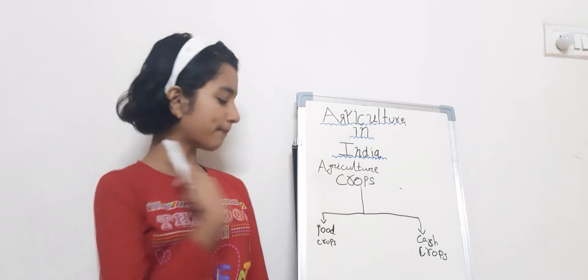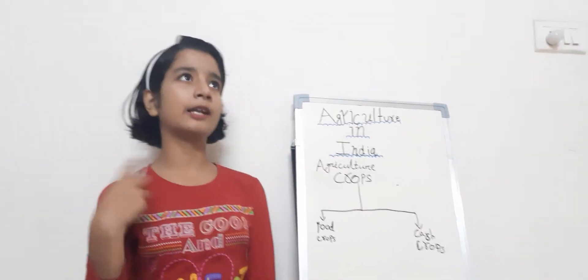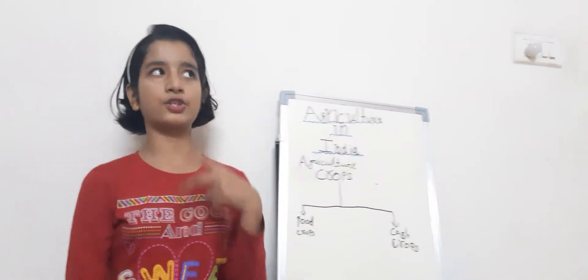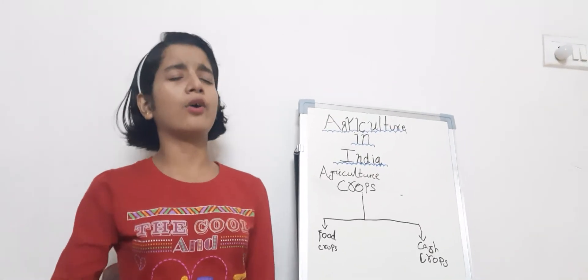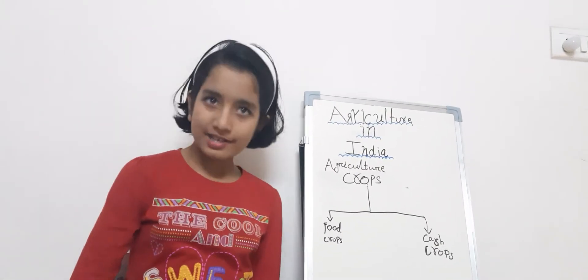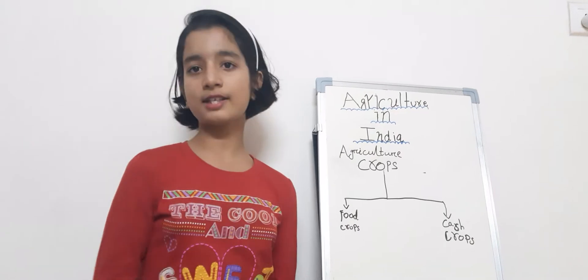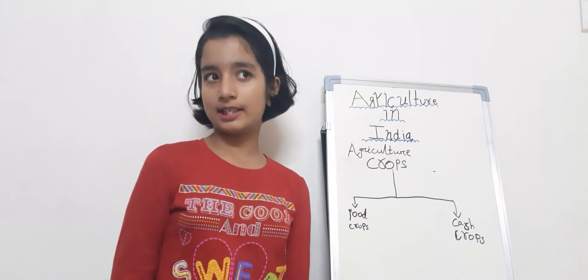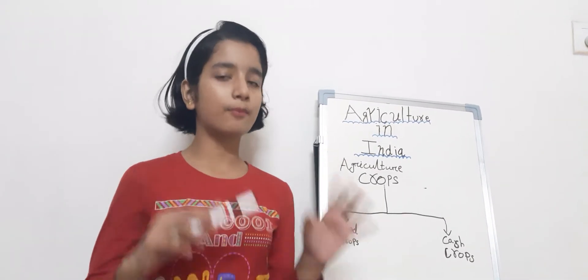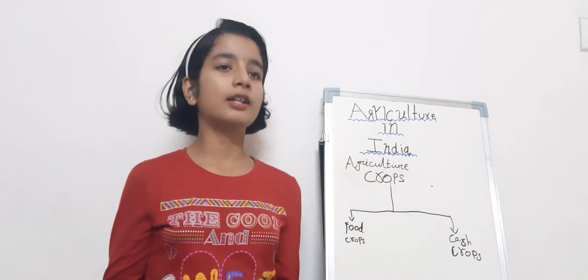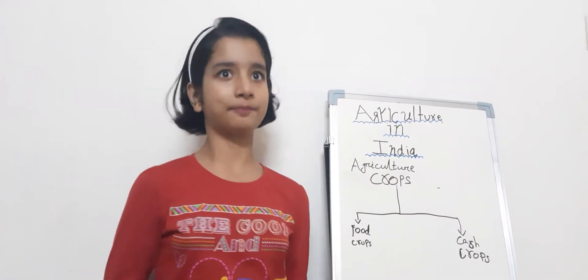The examples of food crops are cereals, pulses, rice, and wheat. Rice and wheat are the staple crops of India. So now let's see more about the staple crops — how they are grown.